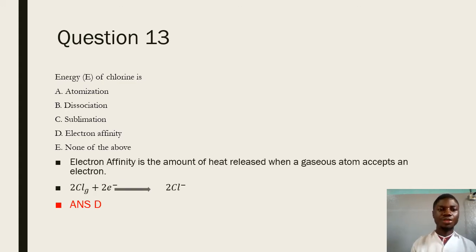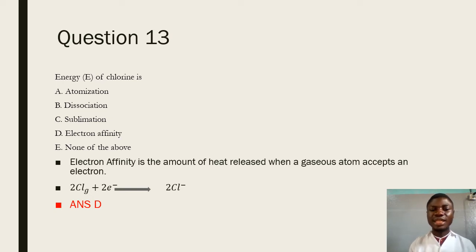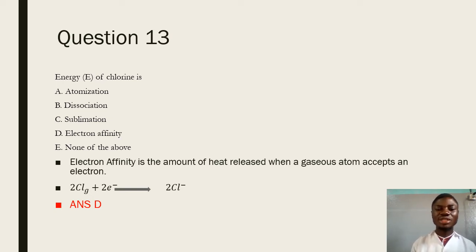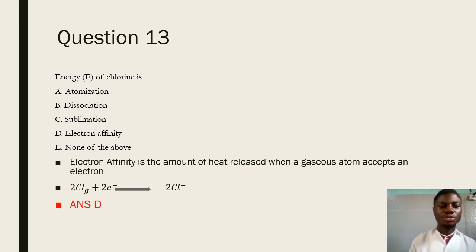Question 13 says: energy E of chlorine is — energy E of chlorine represents the electron affinity, which is the heat energy that is released when a gaseous atom accepts electrons. The answer is going to be D.